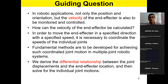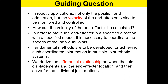The second question is: how can the velocity of the end effector be calculated? Can you calculate the end effector velocity if you know the joint velocities? This is very important in controls. Third, in order to move the end effector in a specified direction with a specified speed — say, for example, a welding operation — it is necessary to coordinate the speeds of the individual joints. It's not arbitrary velocity control; it's coordinated motion of all joints. Even though the end effector moves at uniform speed, the joint angles can have very nonlinear, complicated speed control.